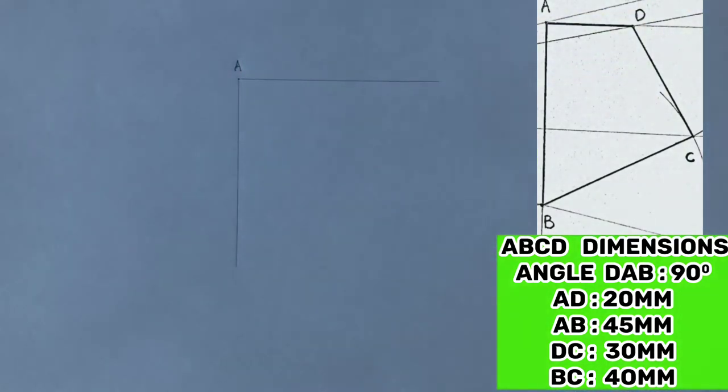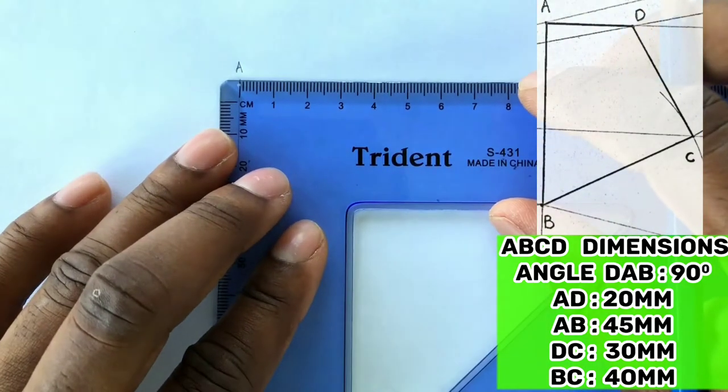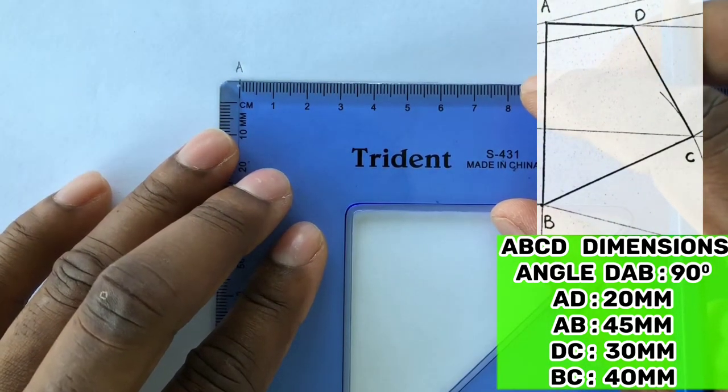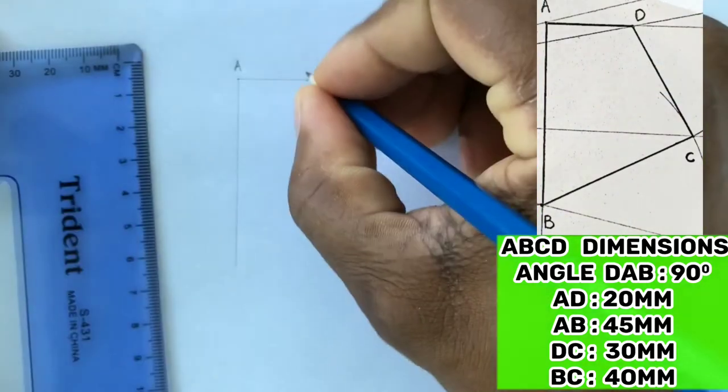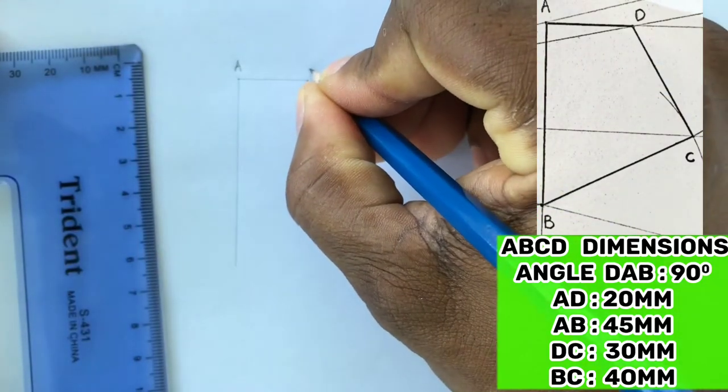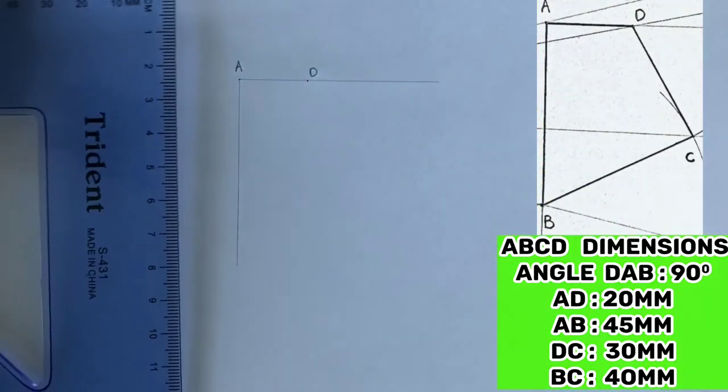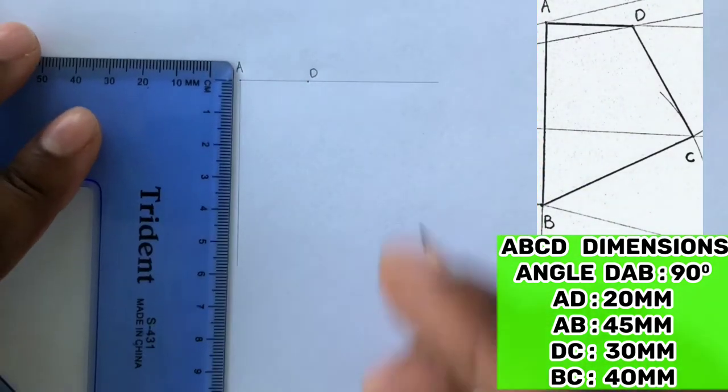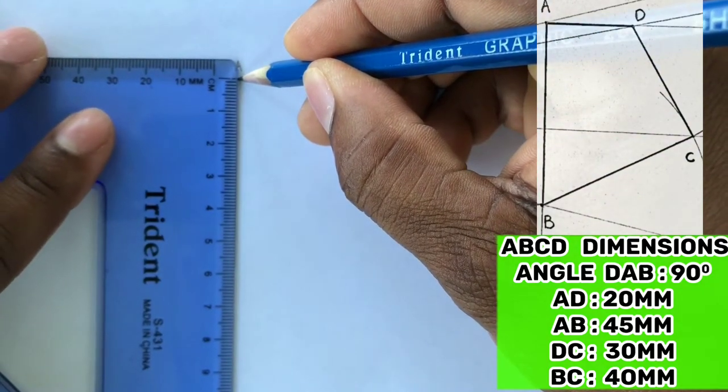On your horizontal line from point A, measure 20 millimeters and identify this point as D. Now on your vertical line from point A, measure 45 millimeters and label this point as B.